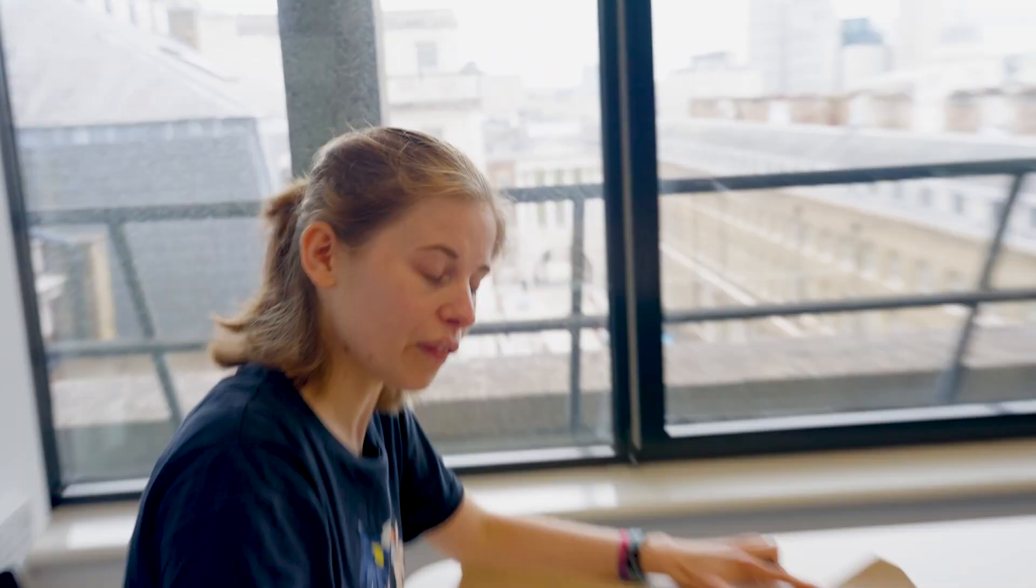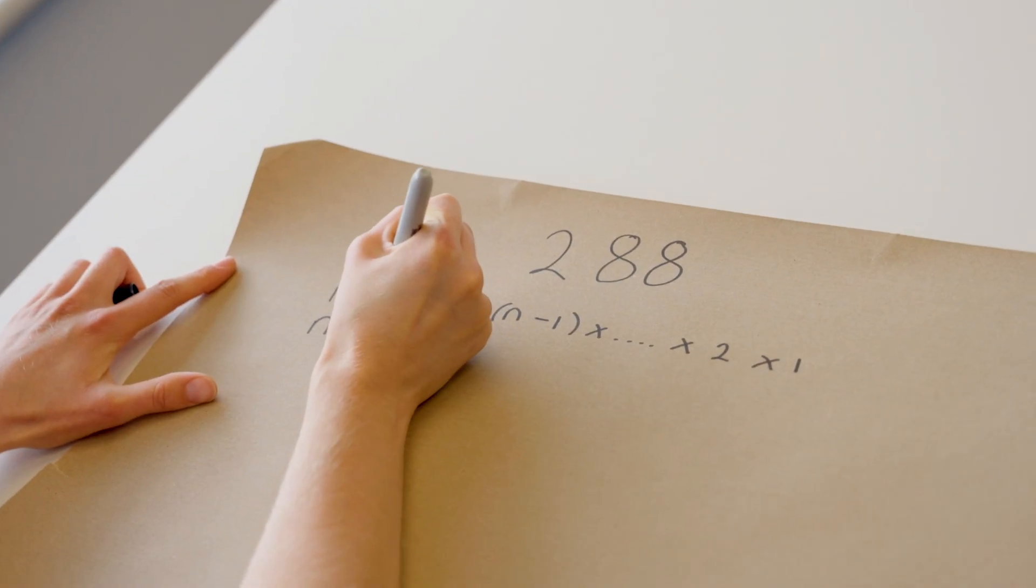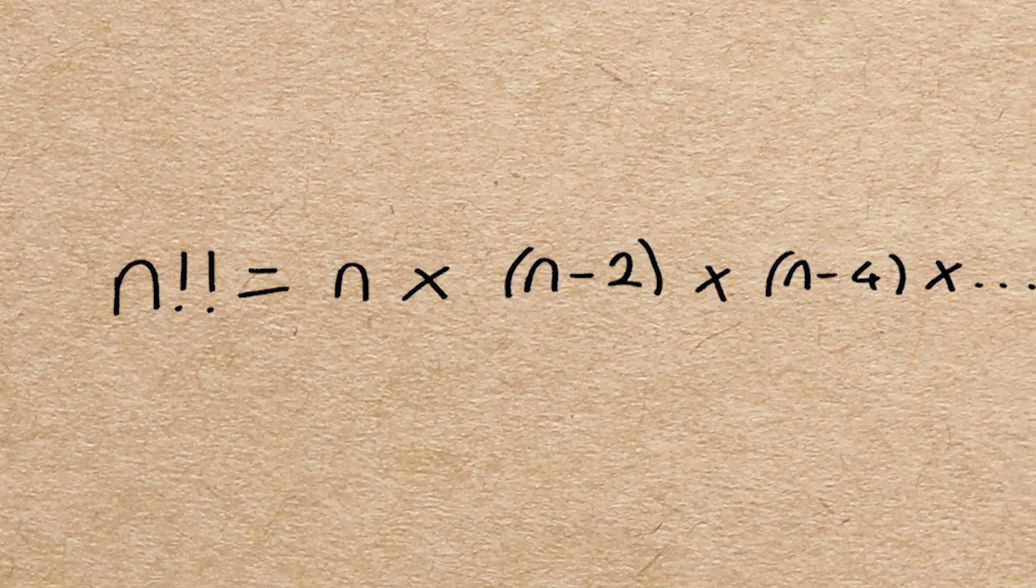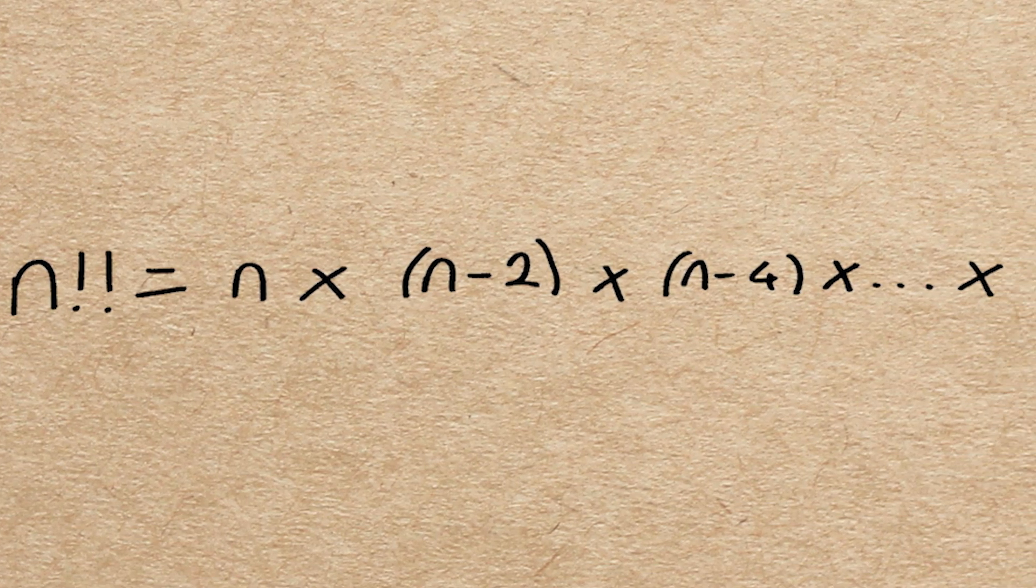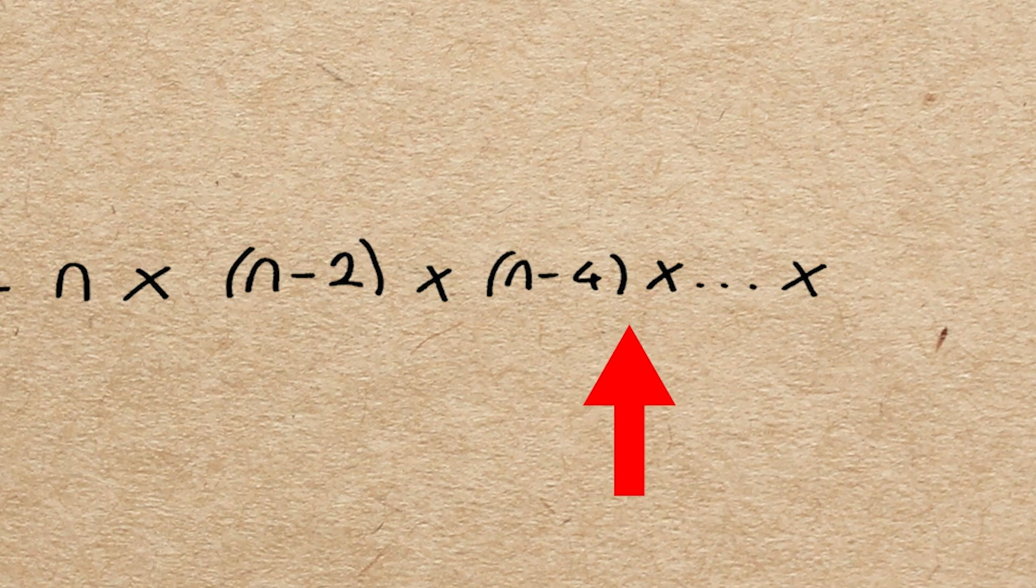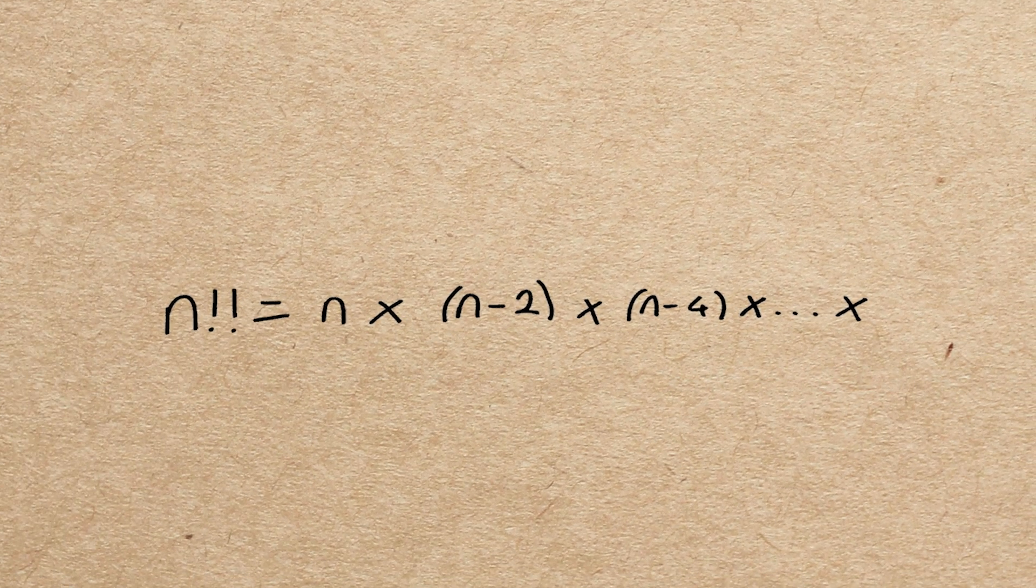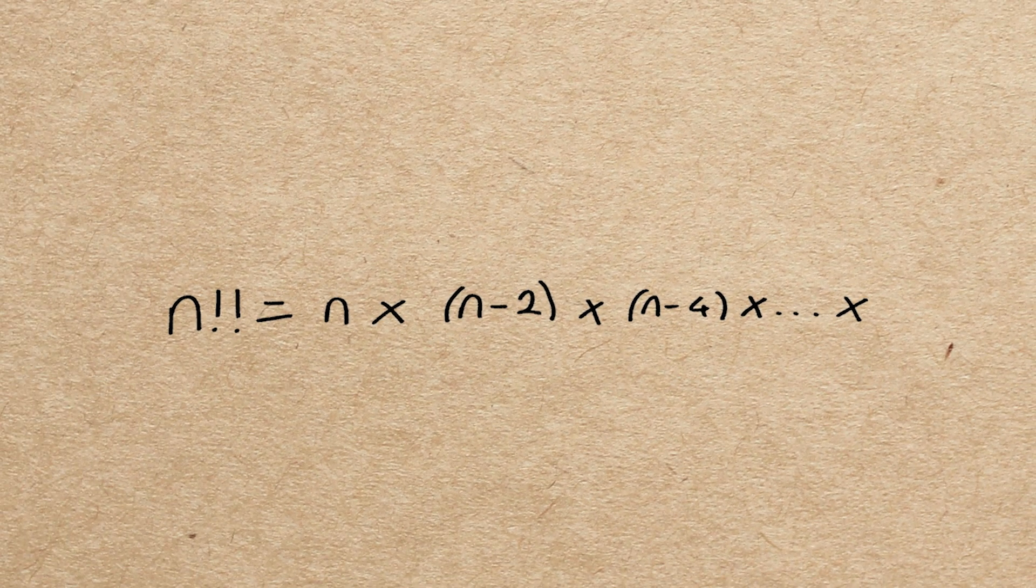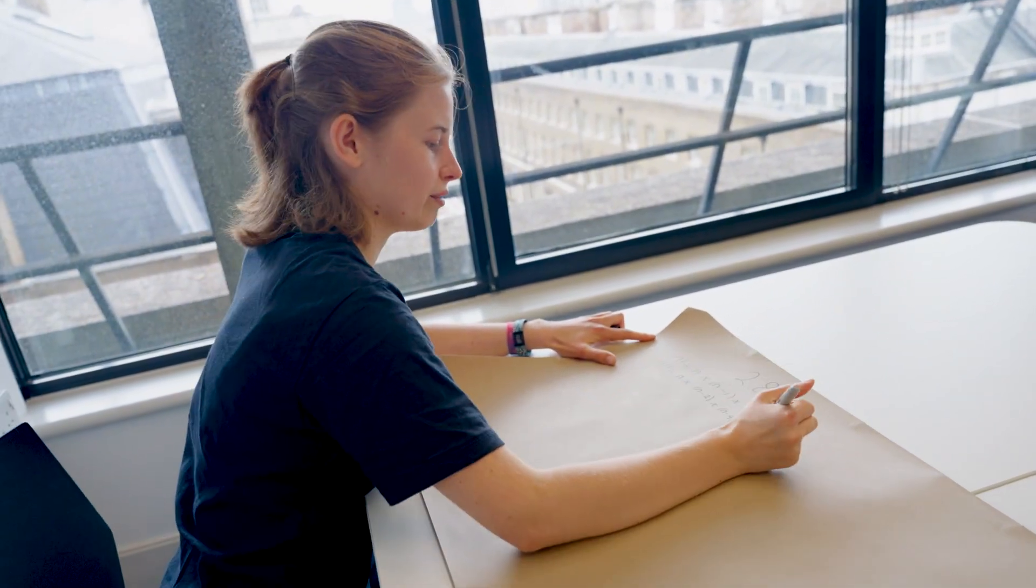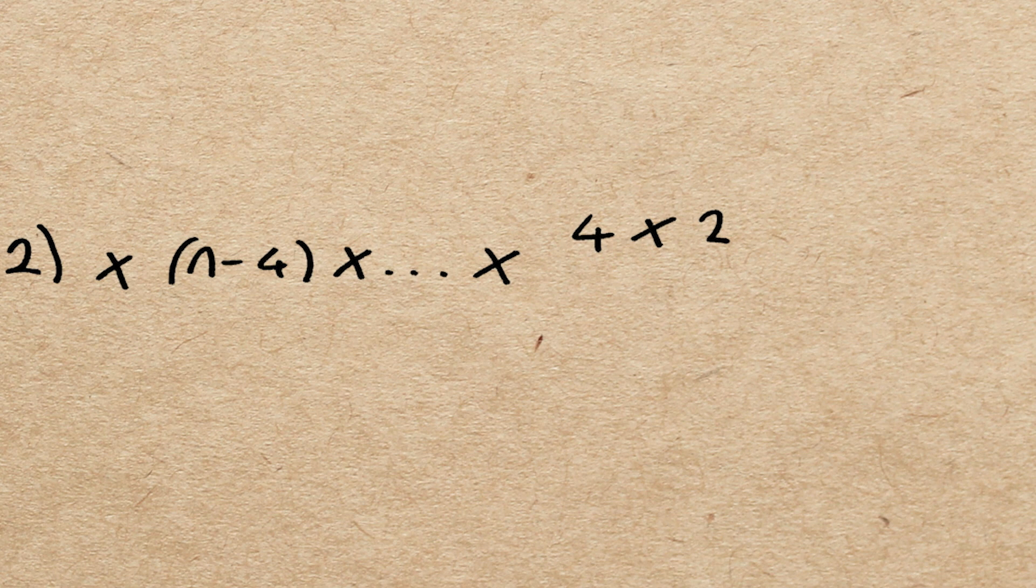There's also something called a double factorial, and what we do here is rather than multiplying everything, we multiply every other term. So it'll be n times n take 2 times n take 4 times dot dot dot. What we end up with depends on whether n is odd or even. If n is even we'll have times 4 times 2, and if n is odd it will be times 3 times 1 at the end.